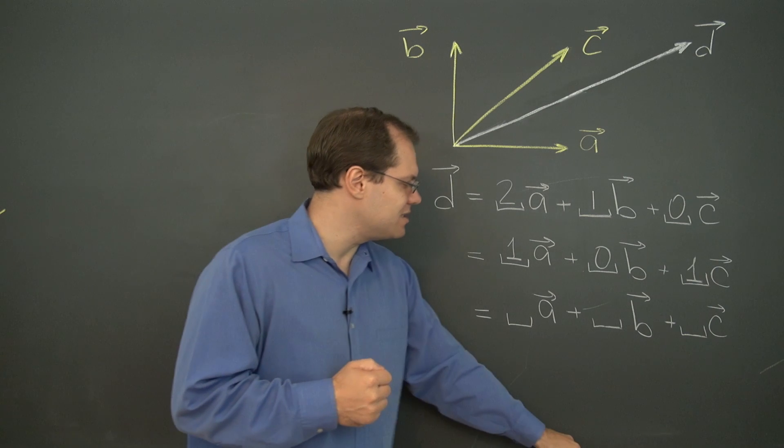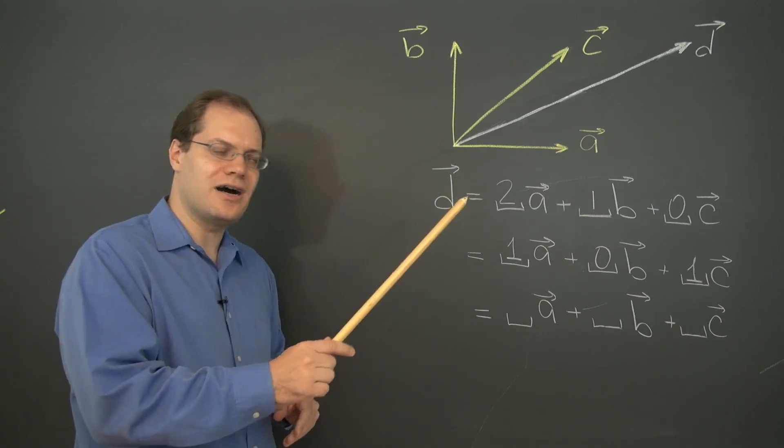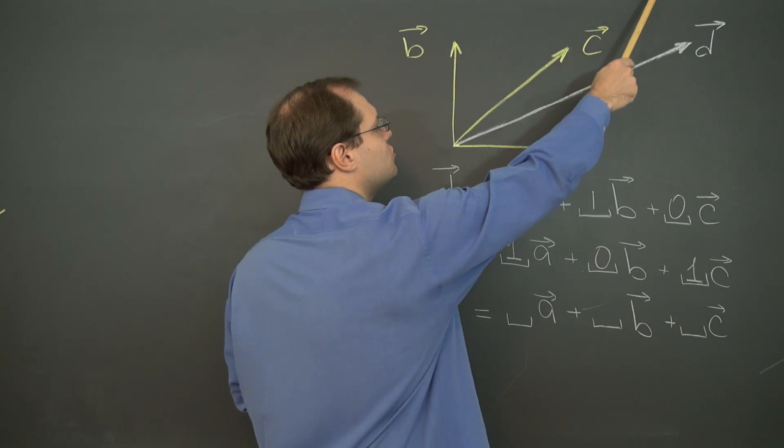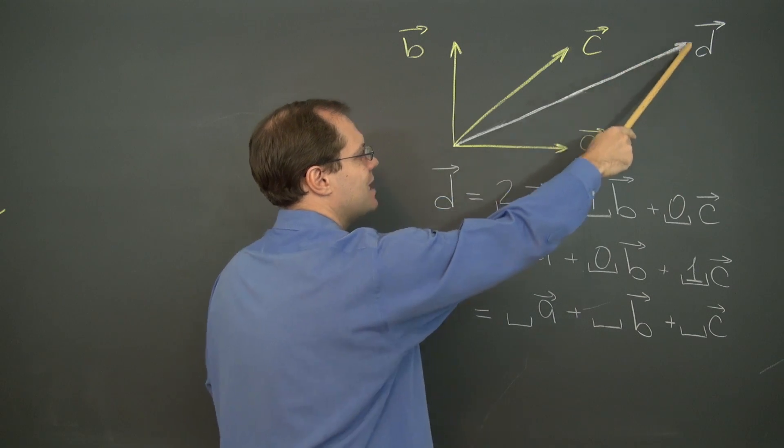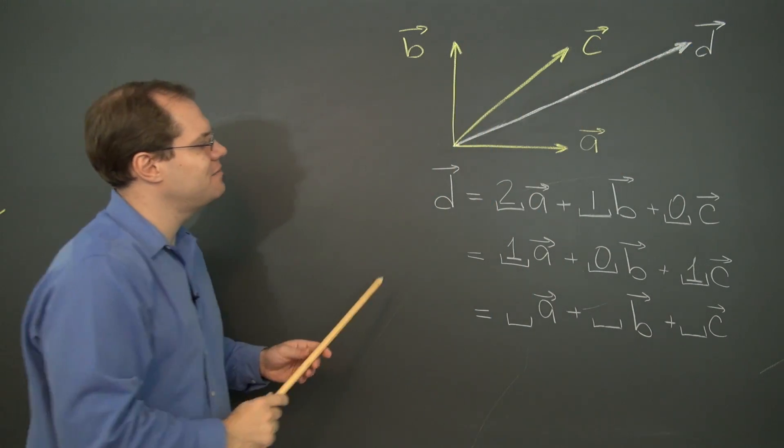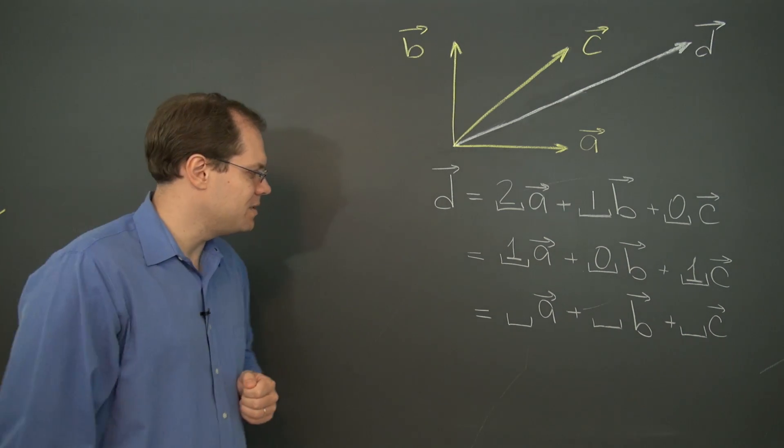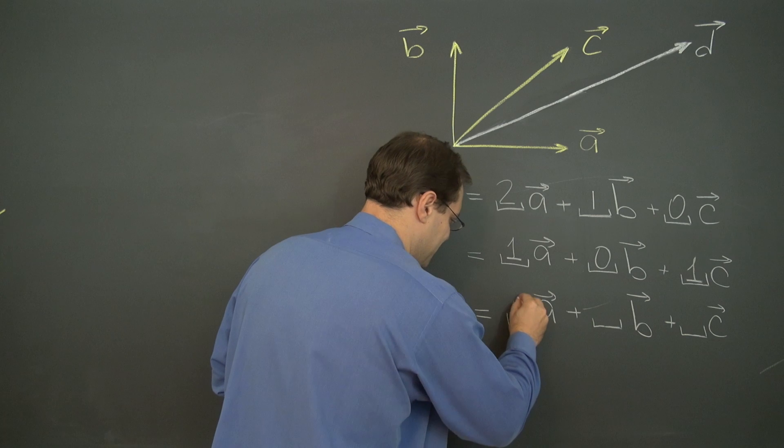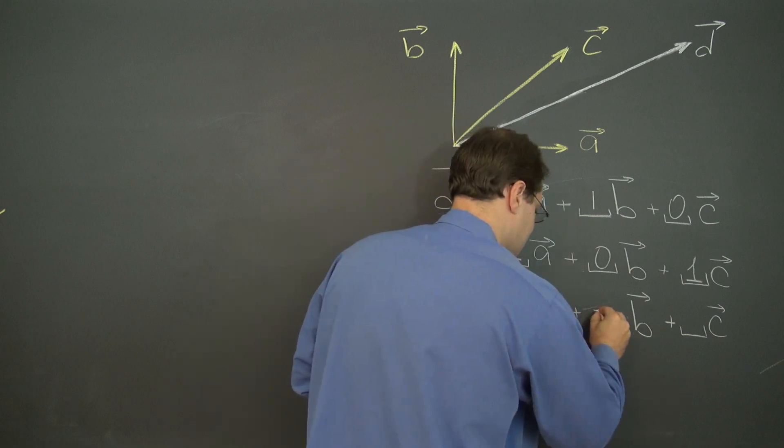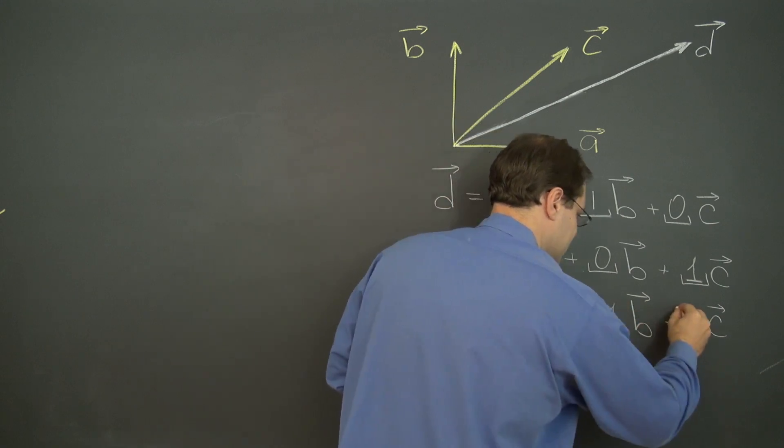So let me show you the one that I see most easily. It won't fit in the shot, but if we take 2c and come down to d with minus b, that's another way to get d, as 2c minus b. So none of a, minus 1 of b, and 2c.